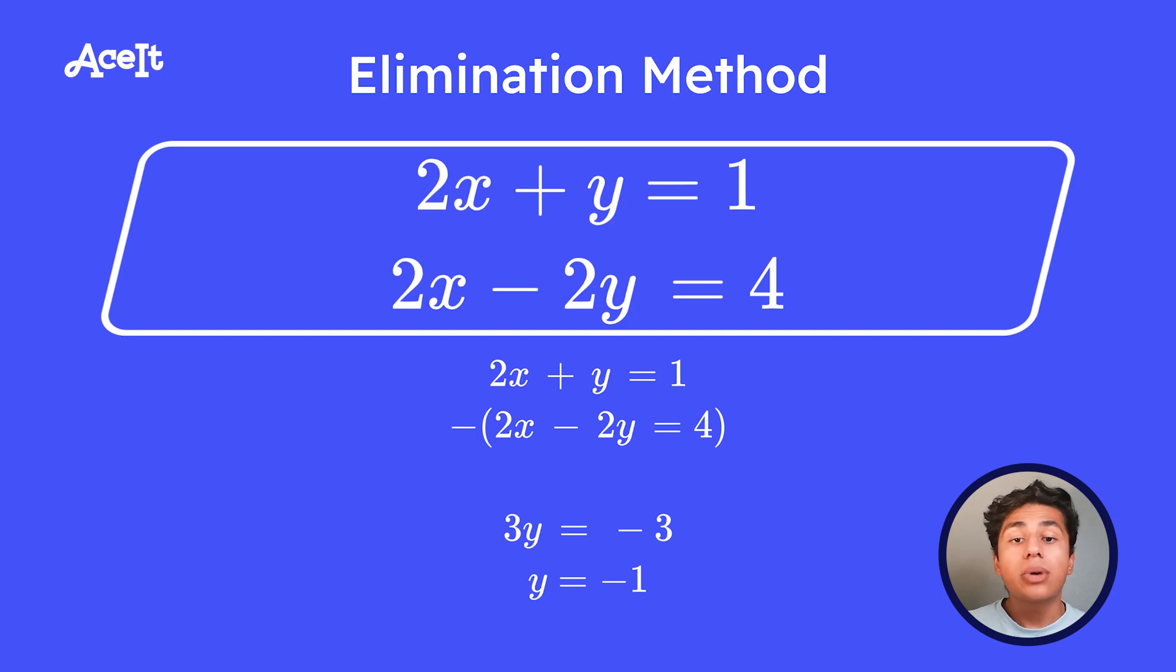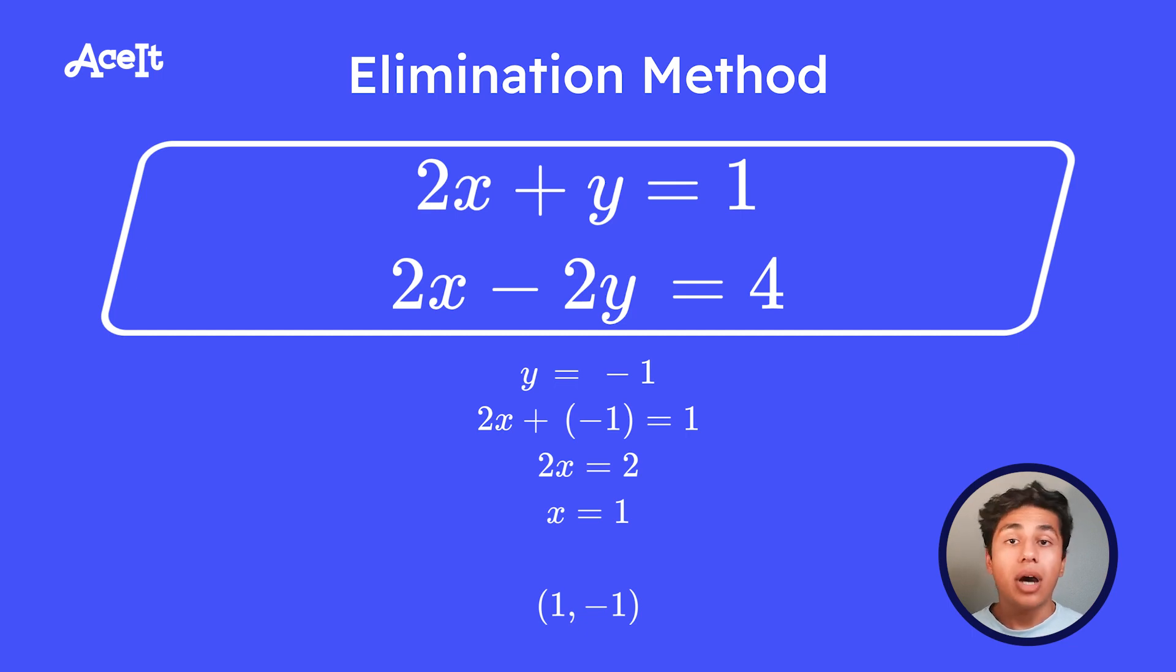So from here, we can do what we did in the substitution method and plug in that negative 1 value for y. So we'll get 2x minus 1 equals 1, which gives you x equals 1 for a final solution of 1, negative 1.